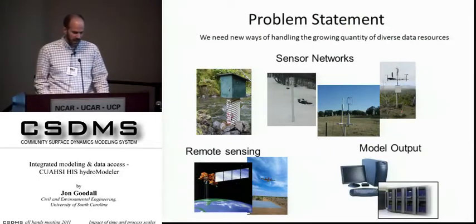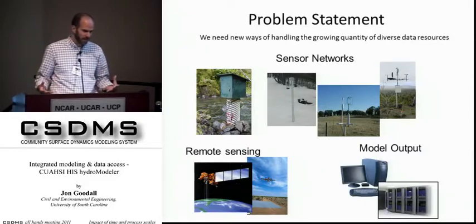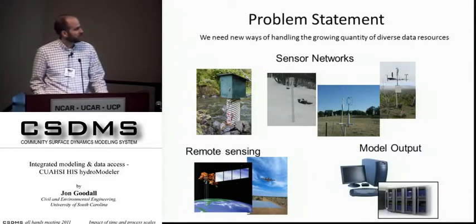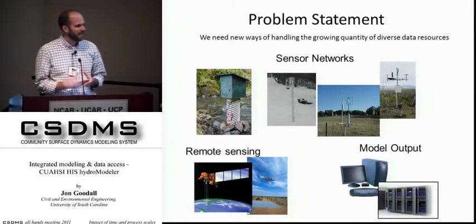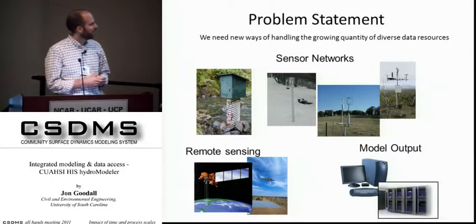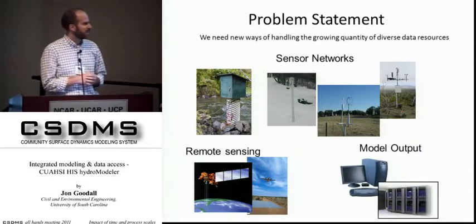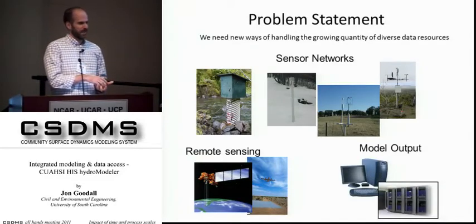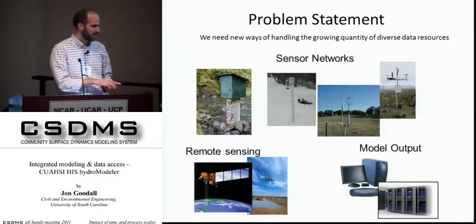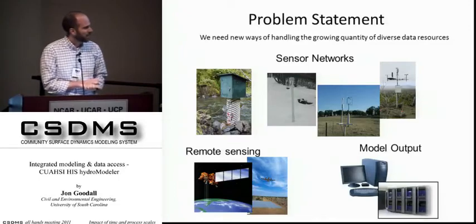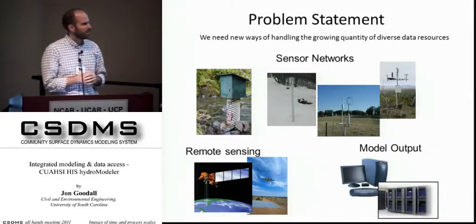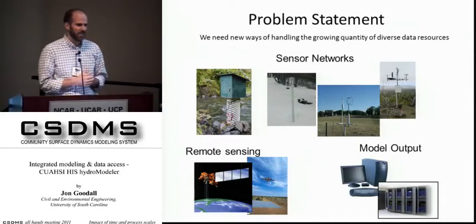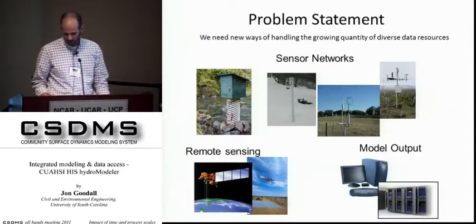The problem statement here — and I almost put problem in quotes — is that we have more and more data being made available through sensor networks, remote sensing, and model output, and we need to advance our techniques for handling and processing this data. How do we leverage that wealth of information effectively to do science? How do I know what data is actually available? Being able to access and integrate data for global-scale studies is a major challenge, and if we can facilitate ways to do that more effectively, we can hopefully advance science.